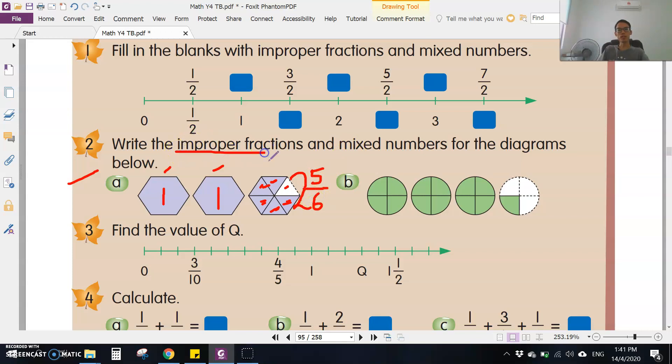If you want to change to improper fraction, you multiply then add. Six times 2 is 12, 12 plus 5 is 17. The bottom number remains. So improper fraction is 17/6. Mixed number is 2 5/6.